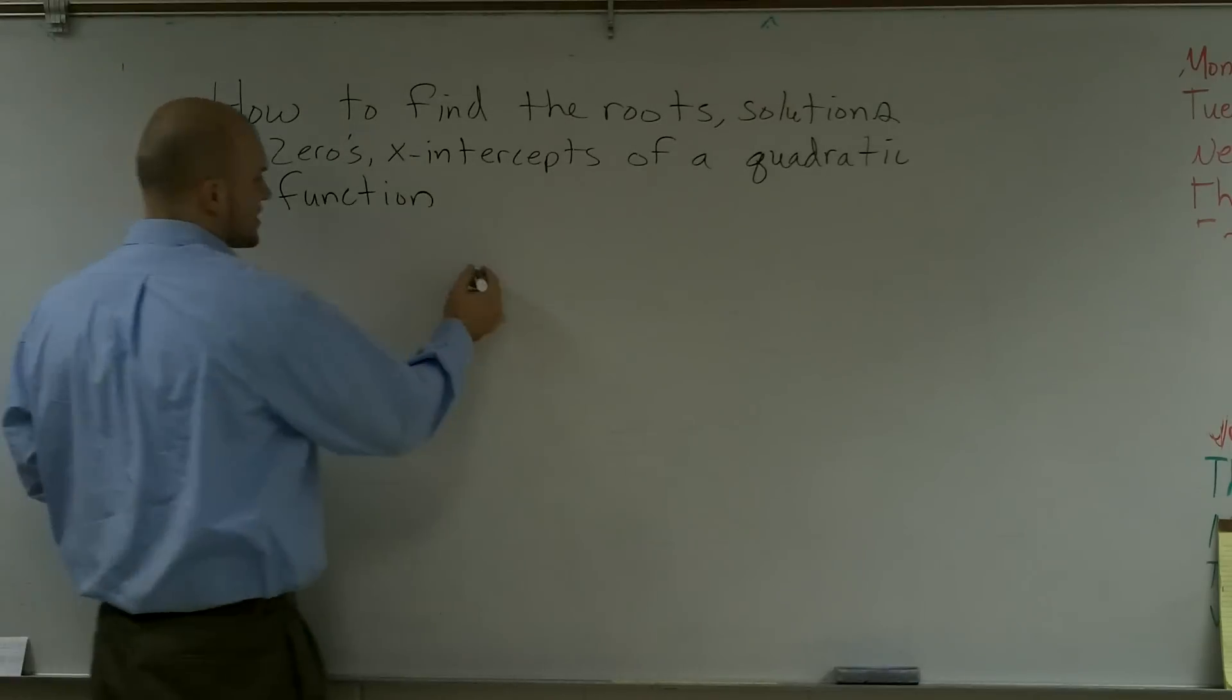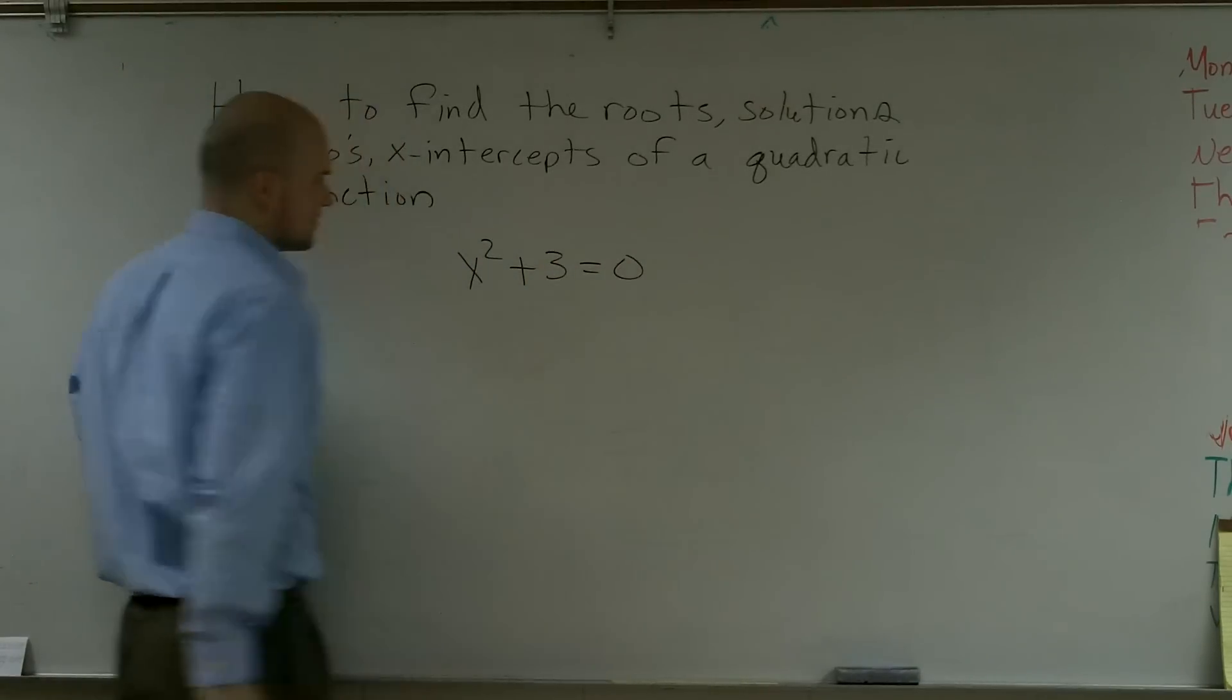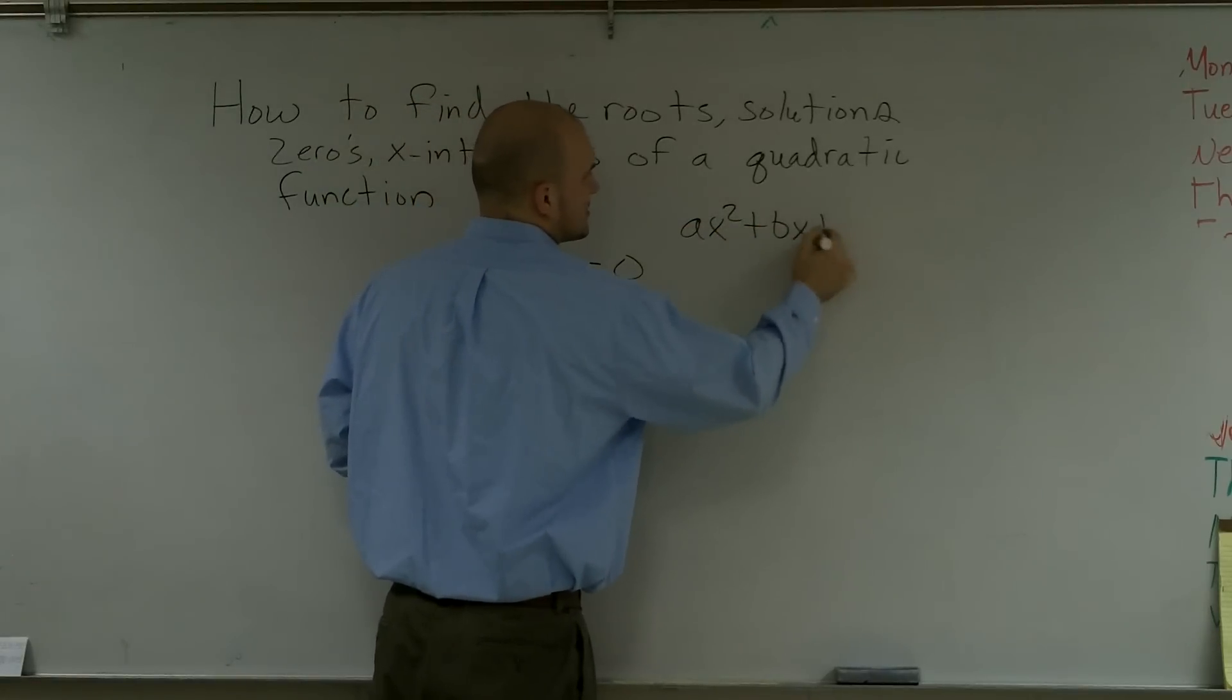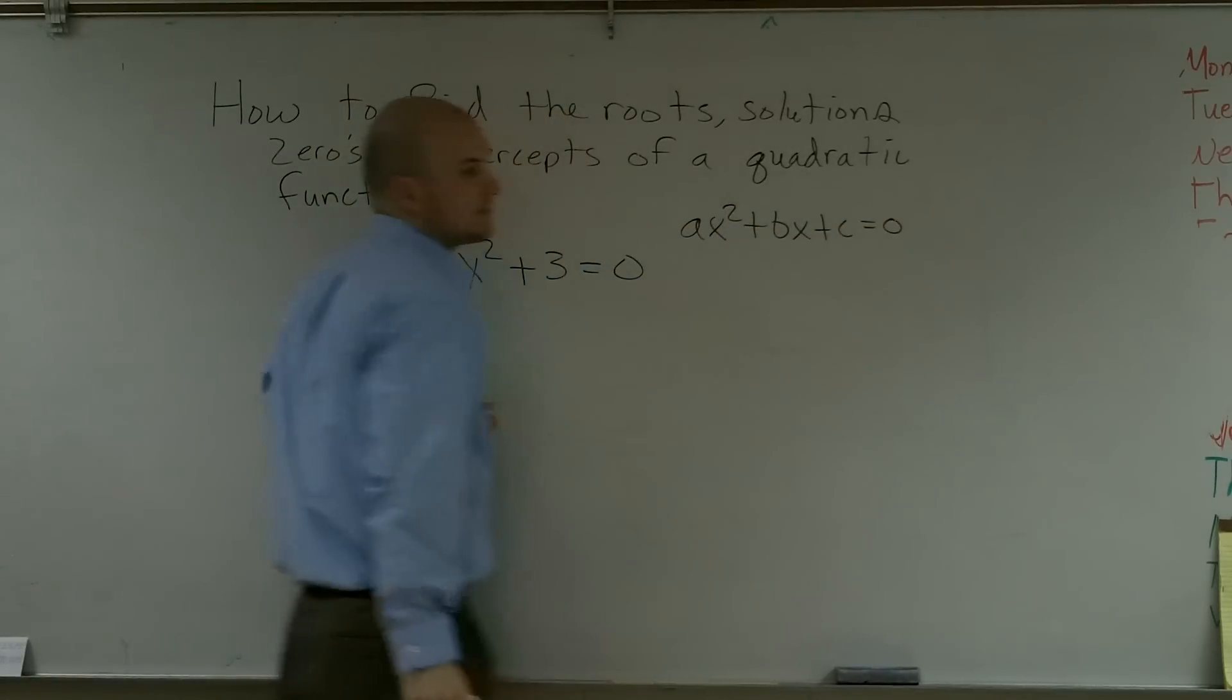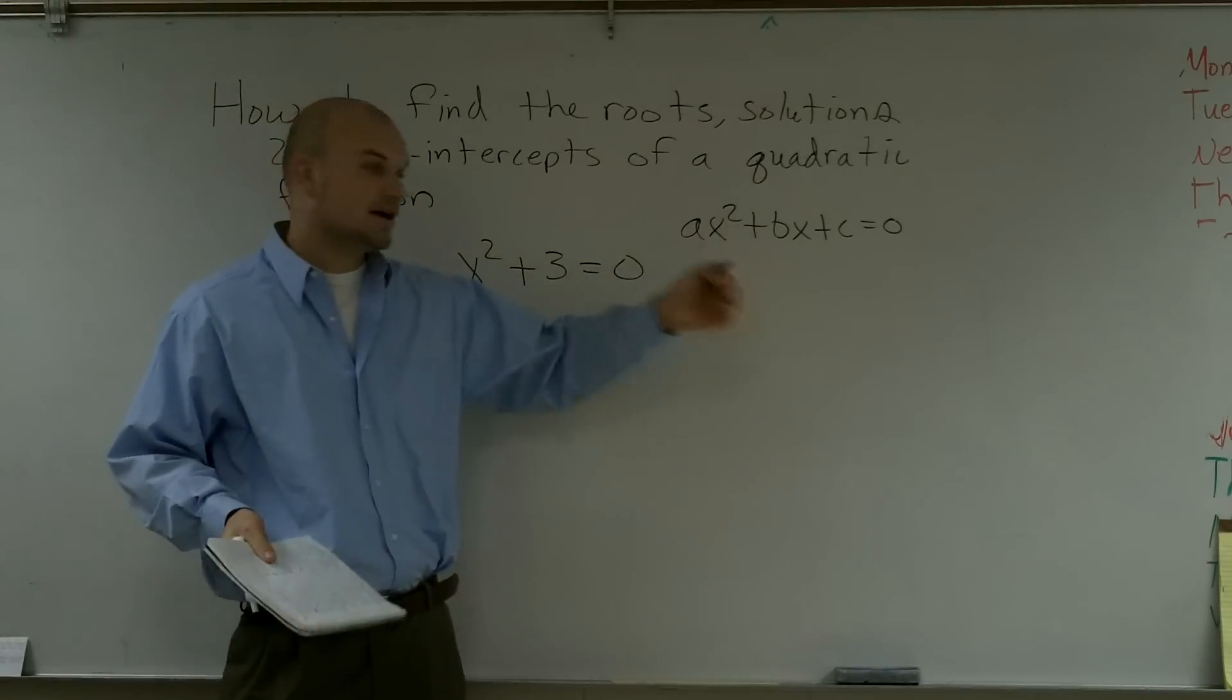So if I give you a quadratic function, x squared plus 3 equals 0. Now, the main important thing for you guys to remember is it's in the form of ax squared plus bx plus c equals 0. It always has to be in that format for us to be able to solve what our x values are.